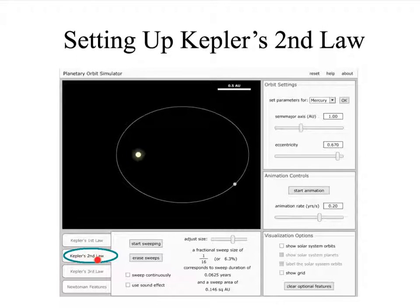Next we have selected the tab to set up the configuration for Kepler's second law. Now again we have the parameters up here that let us control the semi-major axis and the eccentricity of the orbit. We also have this drop-down box which lets us select the orbits of individual planets.